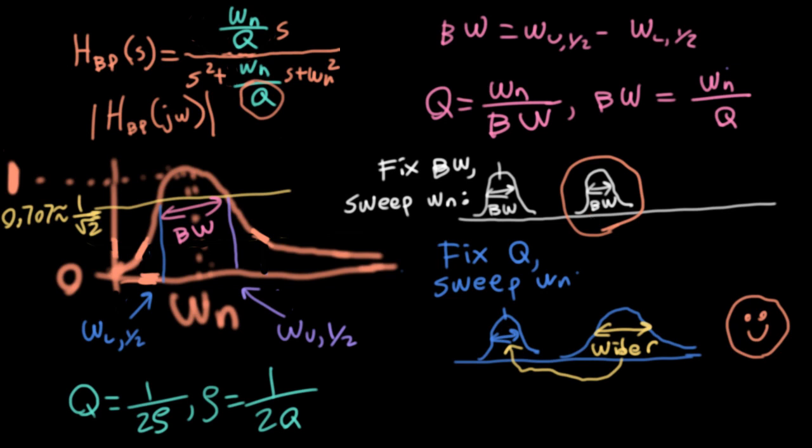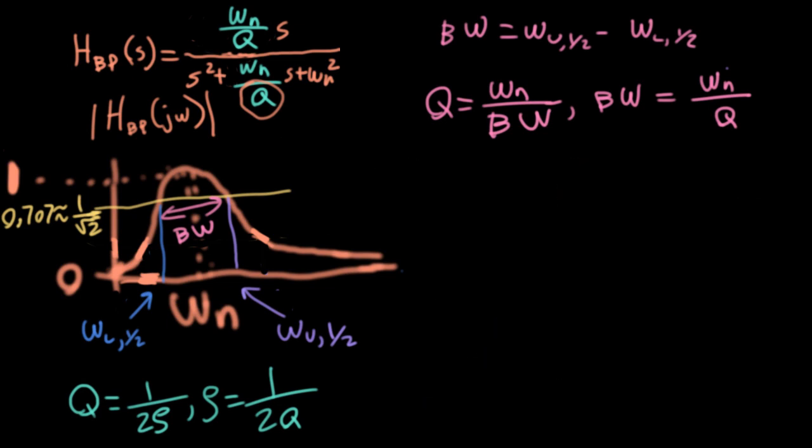In the realm of music synthesis, analog music synthesizers that use two-pole filters will often use one of two topologies. One is called the state variable filter, and the other is called a Sallen-Key filter. These particular topologies are particularly popular because they readily give you separate control over omega-n and over q.